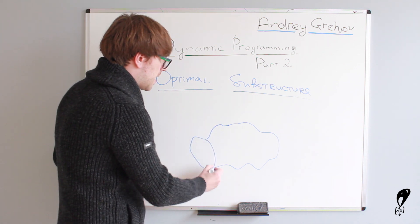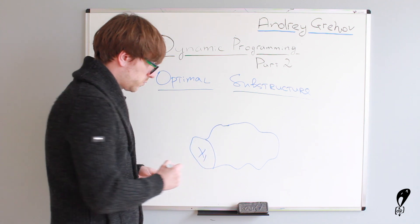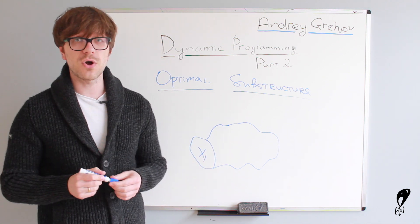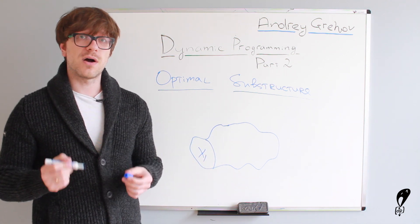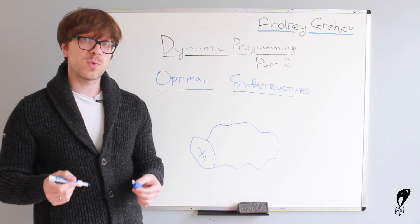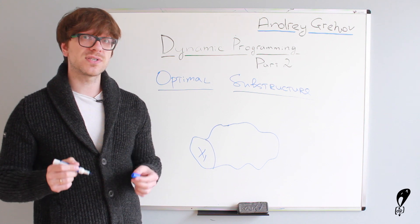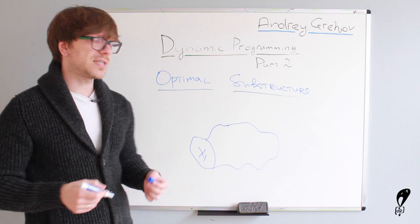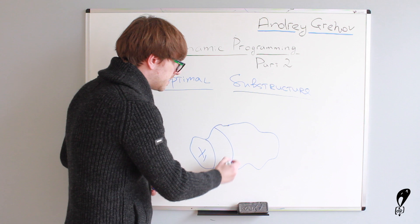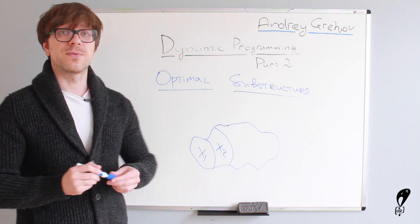we first solve a small piece of the problem, say x1, right? x1. So, x1 is our sub-problem. So, we solve x1 in its most optimal way. And when we have a solution, we can extend our problem space